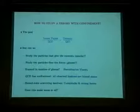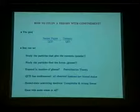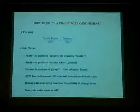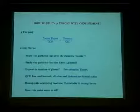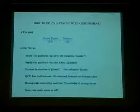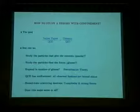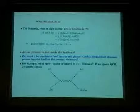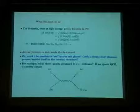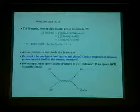How can we study the particles that give the currents that couple both to the gluons and also to the electroweak bosons? Study the particles that give the forces, the gluons, expanded in the number of gluons in perturbation theory. The basic problem is QCD has confinement, so all observed hadrons are bound states. Bound state scattering involves complexity and strong forces when we try to define our asymptotic states, those A and B that we had before. So what do we mean by the S matrix in QCD? Does this make any sense at all? The story is I'll argue that it does, although it was considered for a while a silly thing to look at. What the data tell us: the S matrix, even at high energy is pretty hopeless in perturbation theory.